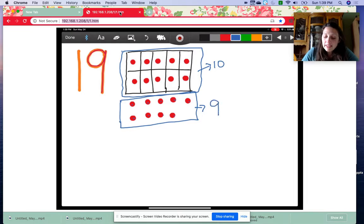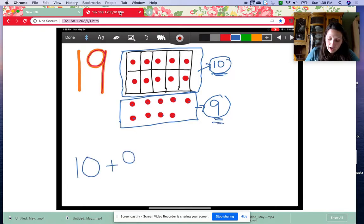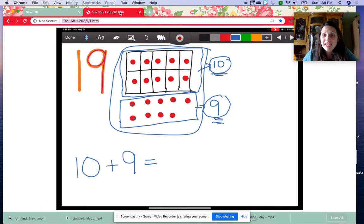I'm going to take these two numbers, this number and this number, and add them together to make a number sentence. So 10 plus nine is equal to how many counters all together. If you said 19, you are correct.